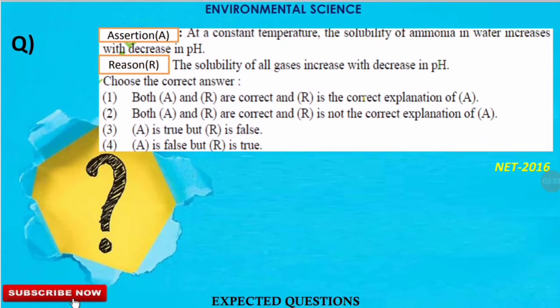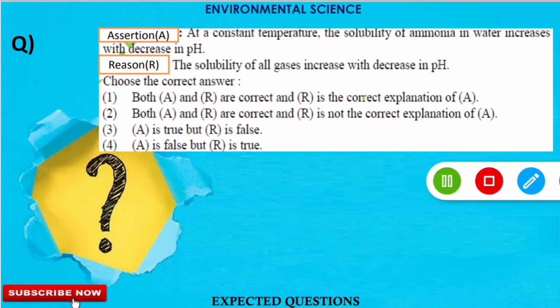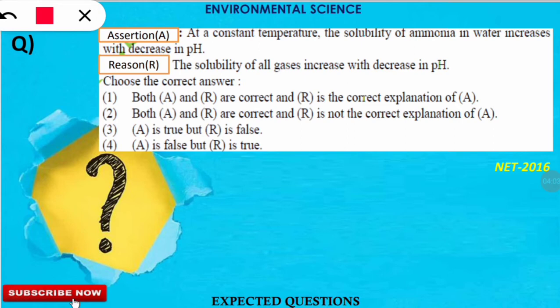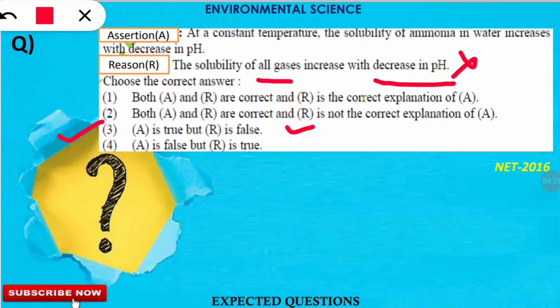The next question is an assertion-reasoning type from the 2016 NET examination. Assertion: at constant temperature, the solubility of ammonia in water increases with decrease in pH. Reason: the solubility of all gases increases with decrease in pH. The reason is false — every gas has its own chemical nature, so pH affects their solubility differently. Since R is false, the answer is: assertion is true but reason is false.